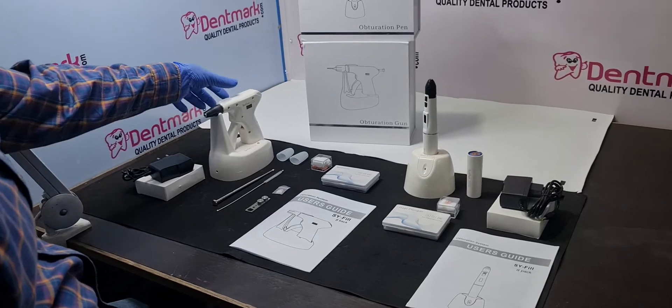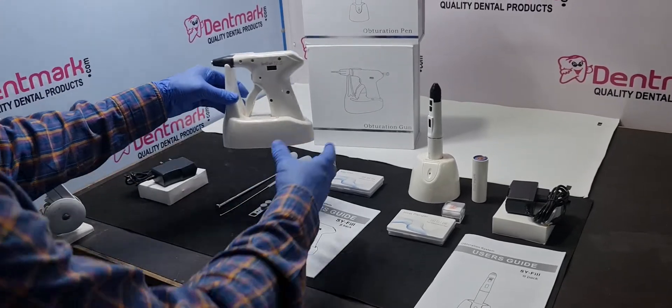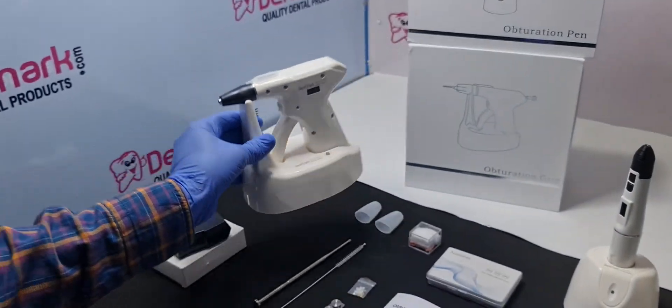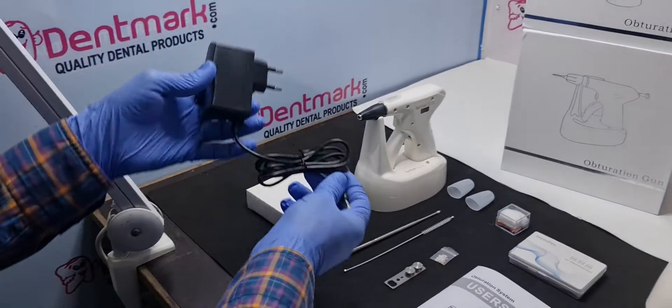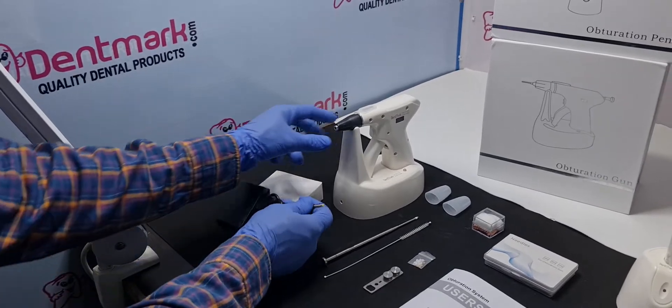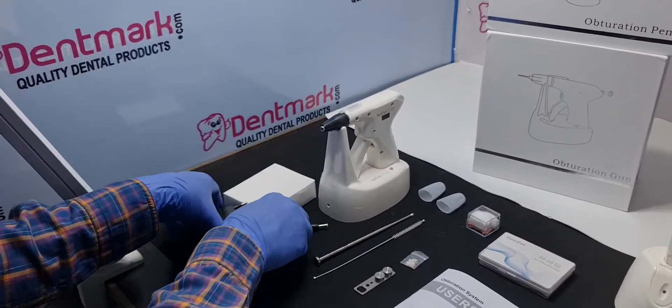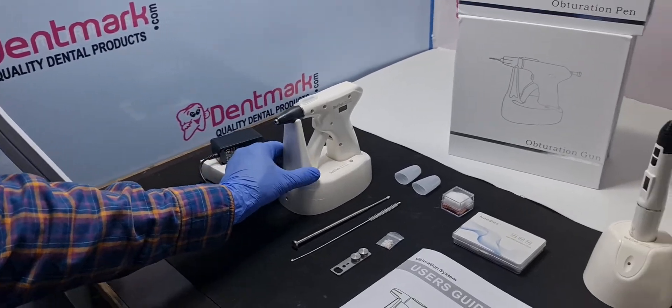So this is obturation gun you can see attached to the charging base. And you can attach this charger here and the chassis comes with this.